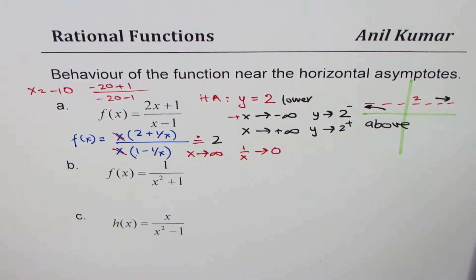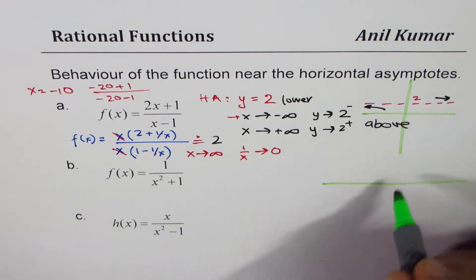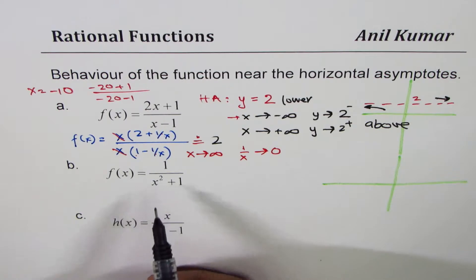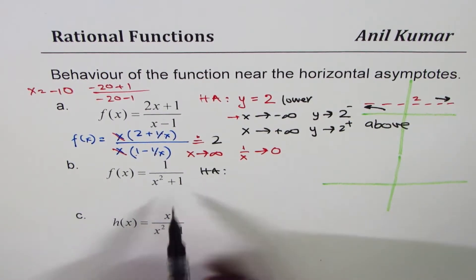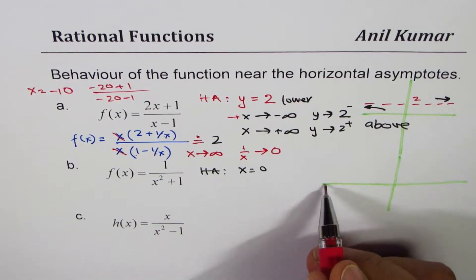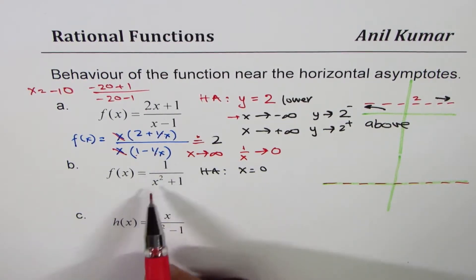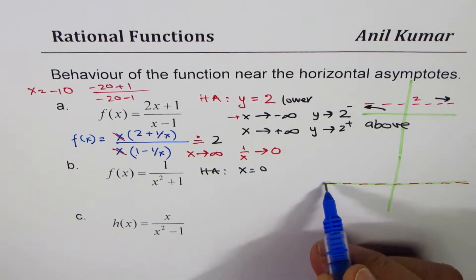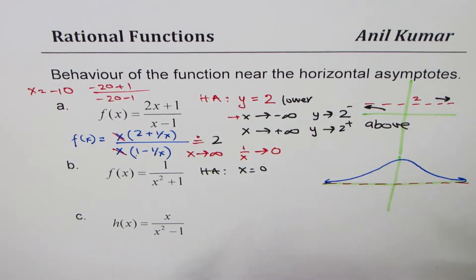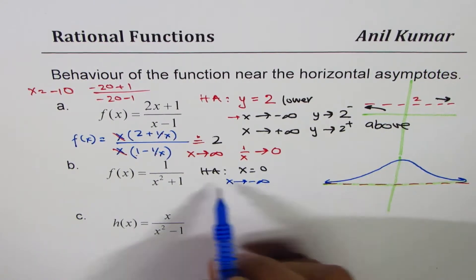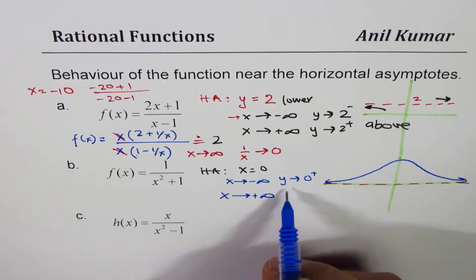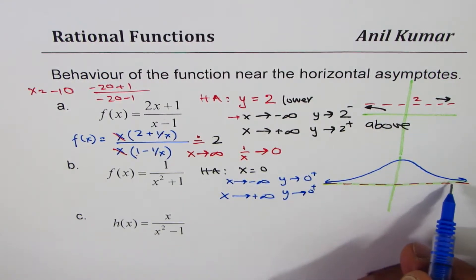Let's look at the next one, which is 1 over x squared plus 1. In this particular case, the degree of the denominator is higher, so the horizontal asymptote is at y equals to 0 — the x-axis itself. The function is 1 over x squared plus 1, which is always positive and easy to sketch. If I put x as a large negative value, y will approach 0 but positive. If I put x as a large positive value, y also approaches 0 from the top. The behavior is clearly from above on both sides.